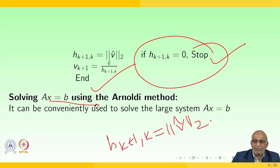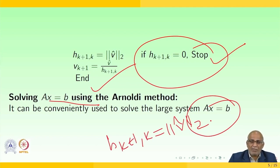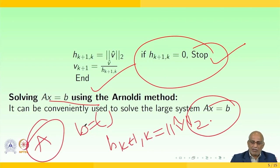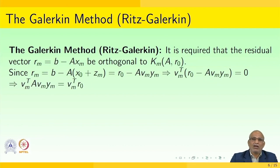Solving Ax = b using the Arnoldi method is very convenient for large systems. Although we are solving a linear system, we are solving very large ones — A is a matrix of larger size, B is the force vector, and X contains the unknowns.